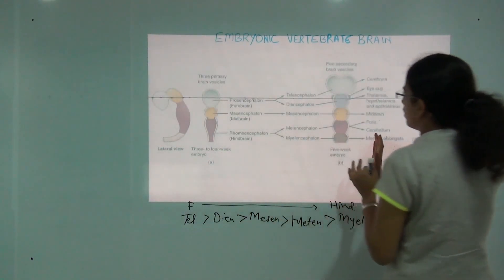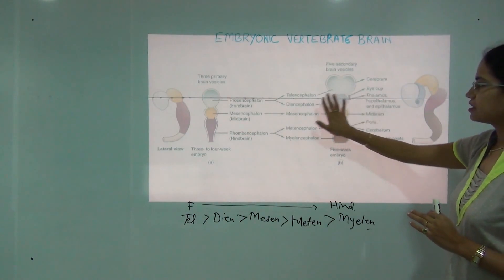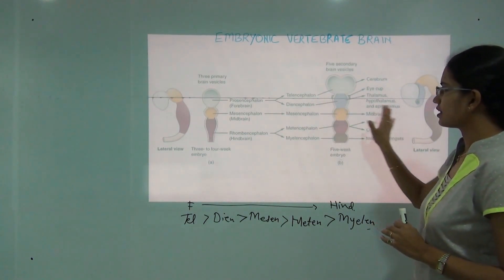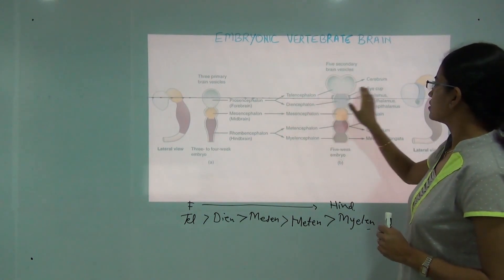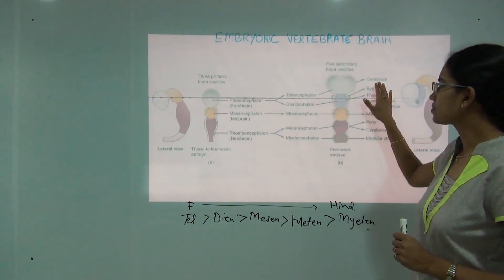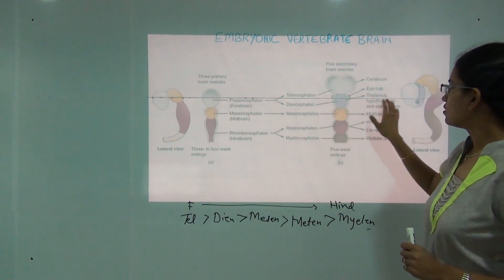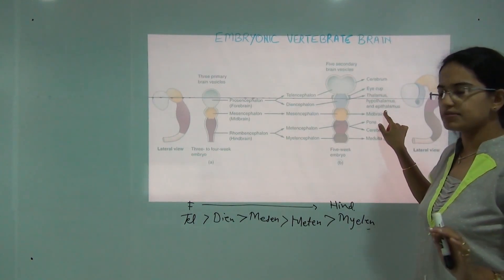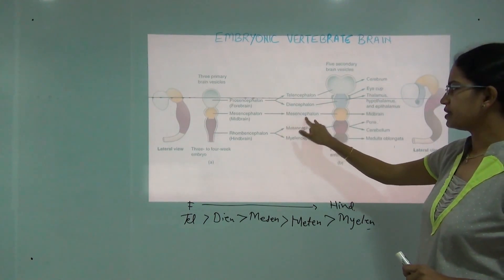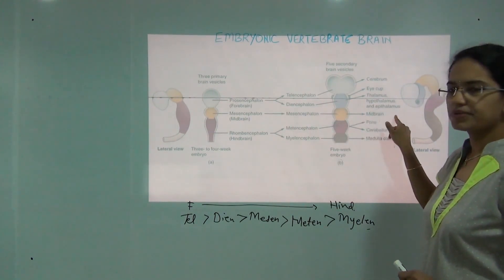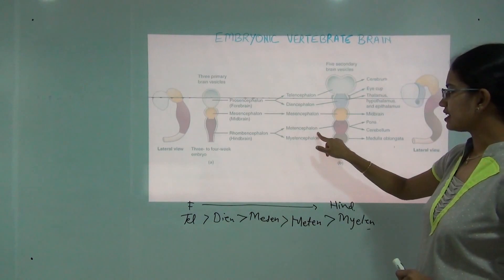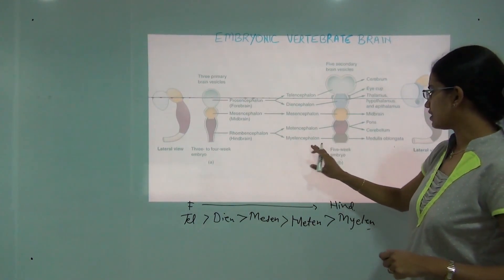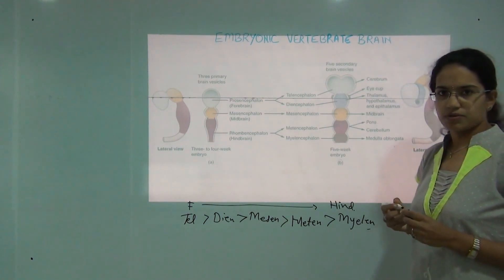After 5 weeks, these parts develop into mature brain regions: telencephalon forms the cerebrum; diencephalon forms the thalamus, hypothalamus, epithalamus, and subthalamus; mesencephalon forms the midbrain; metencephalon forms the pons and cerebellum; and finally myelencephalon forms the medulla oblongata.